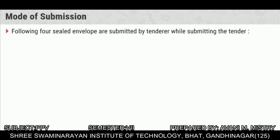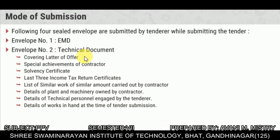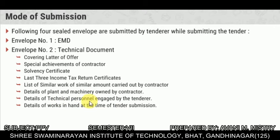Mode of submission: tenders are submitted through envelopes. Envelope number 1 is for EMD (Earnest Money Deposit). Envelope number 2 is for technical documents, including the covering letter of the offer, achievements of the contractor, solvency certificates, last three income tax returns, list of similar works carried out by the contractor, details of plant and machinery, details of technical personnel engaged, and details of works in hand at the time of tender submission.